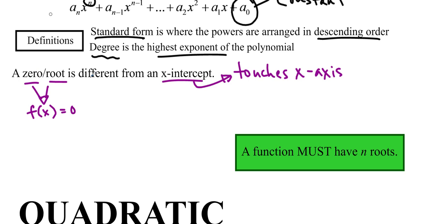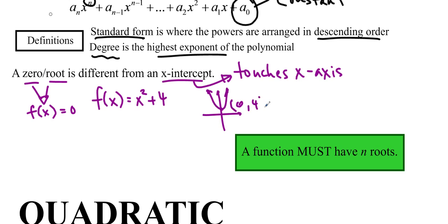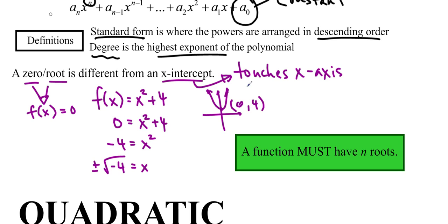This seems like a fine difference, except when you think about something like f of x equals x squared plus 4. This has no x-intercepts because it hovers above and it's got a vertex at (0, 4). So it has no x-intercepts. But it does have two zeros. If you set this equal to zero, we move it over and square root it, and we actually get x equals plus or minus the square root of negative 4. If you know anything about imaginary numbers, we know that i equals the square root of negative 1. So this isn't a real number — you can't square something and have it be negative. But we can imagine that there is such a number, so that's why it's called the imaginary number. And anything involving imaginary numbers is called complex.